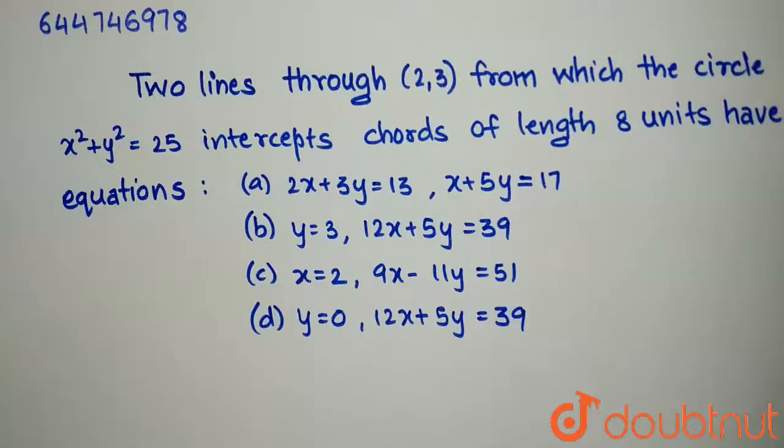Hello everyone, today you have been given the question. Two lines through (2,3) from which the circle x²+y²=25 intercepts chords of length 8 units have equations, and you have been given 4 options.